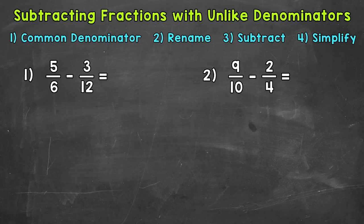As for why we need a common denominator, that's a topic for another video — I'll drop that link in the description. Now as you're looking at a subtraction problem involving fractions with unlike denominators, you may recognize the least common multiple between denominators right away. But if not, you can always write out your lists of multiples in order to find it.